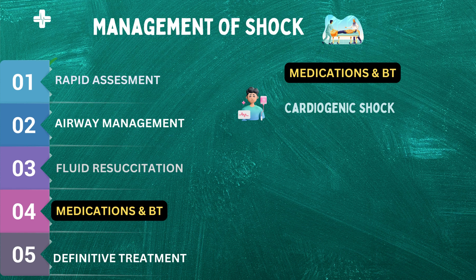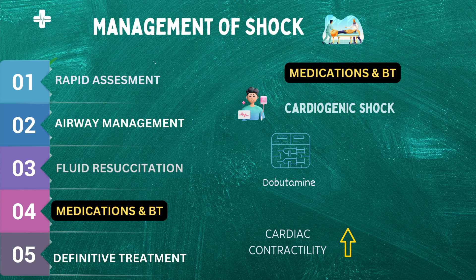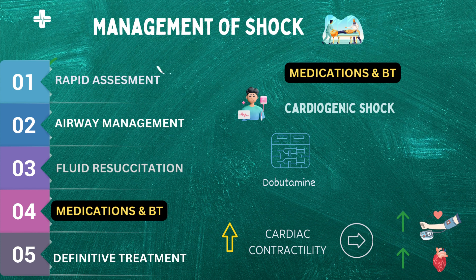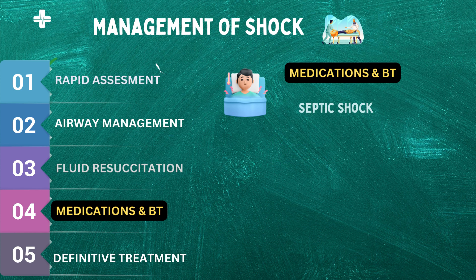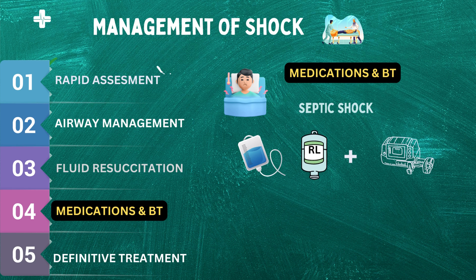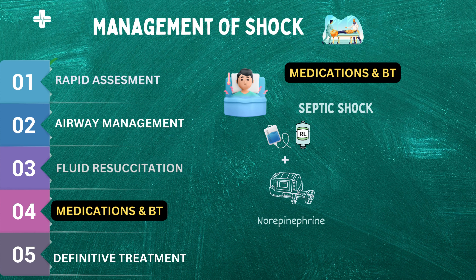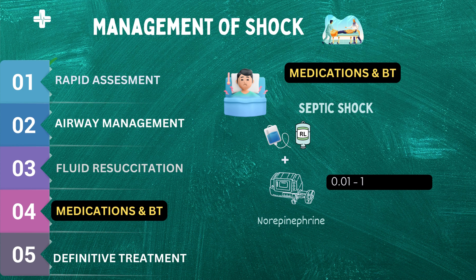Next, let's discuss medications used in cardiogenic shock, which occurs due to reduced cardiac function. One example of an inotropic medication used is dobutamine, a synthetic catecholamine that increases cardiac contractility, leading to an increase in cardiac output and blood pressure. The recommended dosing for dobutamine is 2 to 20 micrograms per kilogram per minute, with the dose adjusted based on the patient's response. In septic shock, healthcare professionals may use vasopressor medications combined with fluid resuscitation. One common vasopressor is norepinephrine, which constricts blood vessels and increases blood pressure. The recommended dosing for norepinephrine is 0.1 to 1 microgram per kilogram per minute, adjusted based on the patient's response.